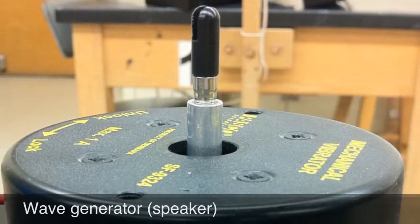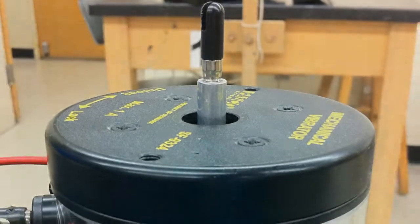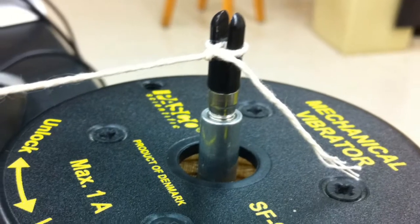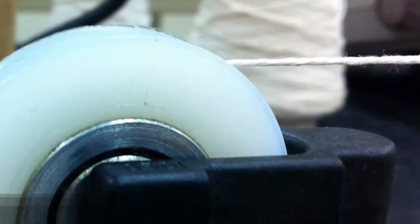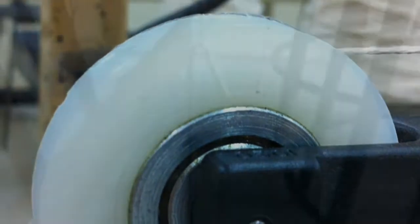This is our setup. Here's our wave generator. We'll be using this to produce waves. These waves will travel down a string that will be tied to the generator and this will go over a pulley and we'll go down to a mass which will be our source for tension.